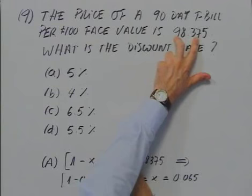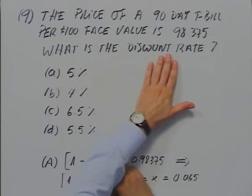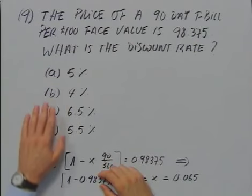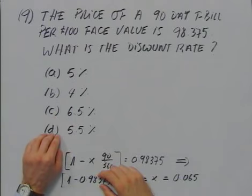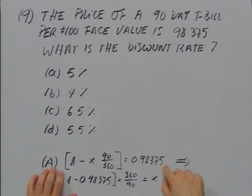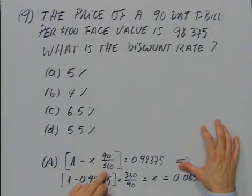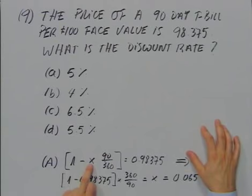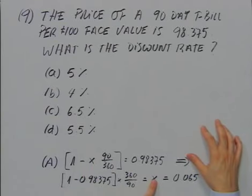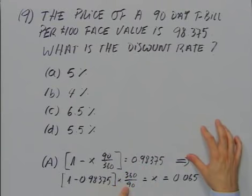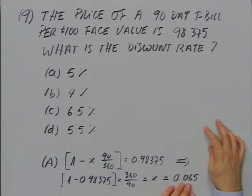The price of a 90-day T-bill per $100 face value is 98.375. What is the discount rate — is it 5%, 4%, 6.5%, or 5.5%? We know the price equals 1 minus the discount rate times (90/360), multiplied by face value. Solving for X: X equals (1 minus the given price) times (360/90). That calculation gives 0.065, which is 6.5% — answer C.